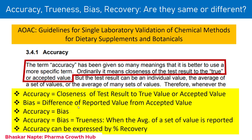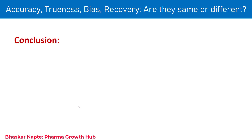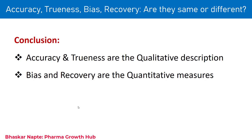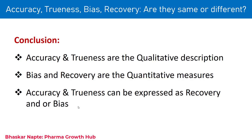Having discussed these four guidance documents, let us now come to a conclusion. First: accuracy and trueness are qualitative descriptions. Second: bias and recovery are quantitative measures. Third and most importantly: accuracy and trueness can be expressed as recovery and/or bias. So whatever value you report must be in terms of recovery or in terms of bias. Accuracy and trueness can be synonyms for each other, and they are expressed through percent recovery or bias values.